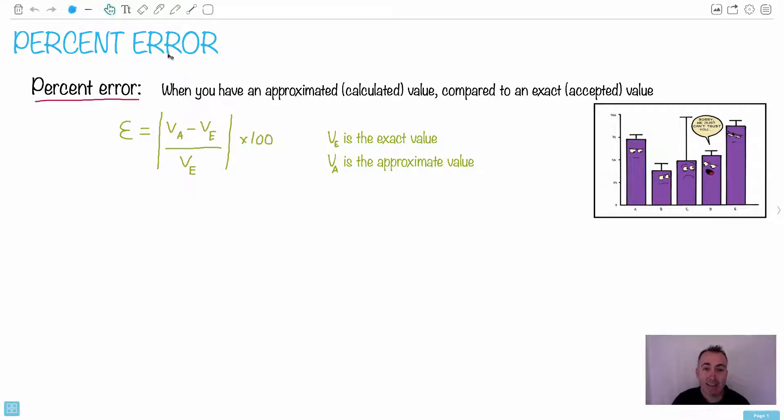Percent error is something that's actually surprisingly easy to do. There's just an equation for it, and we're just looking at how two different numbers differ from each other. When you have an approximated or a calculated value, we compare that to the exact or the accepted value.